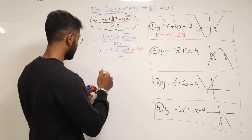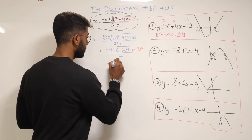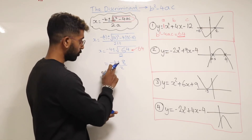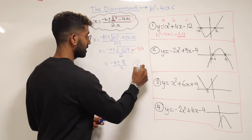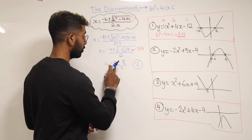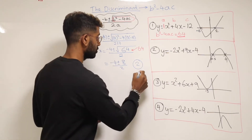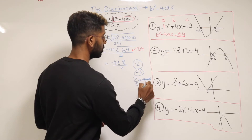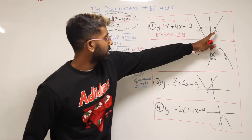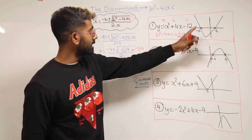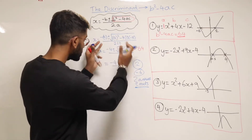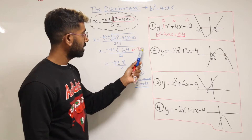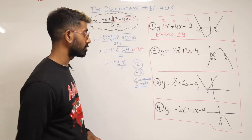Taking it one step further: the square root of 64 is 8. So we'd have minus 4 plus or minus 8, divided by 2. The first answer would be minus 4 plus 8, which is 4, divided by 2 gives 2. The second answer would be minus 4 minus 8, giving minus 12, divided by 2 gives minus 6. So we get two roots. As you can see on the graph, it crosses the x-axis at minus 6 and at 2. The discriminant was positive and we got two solutions.